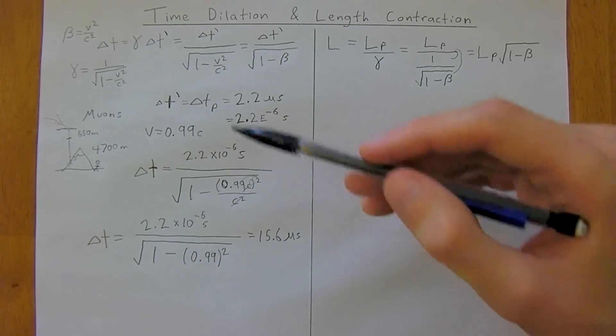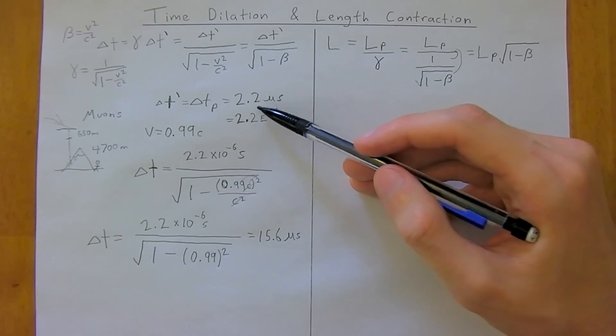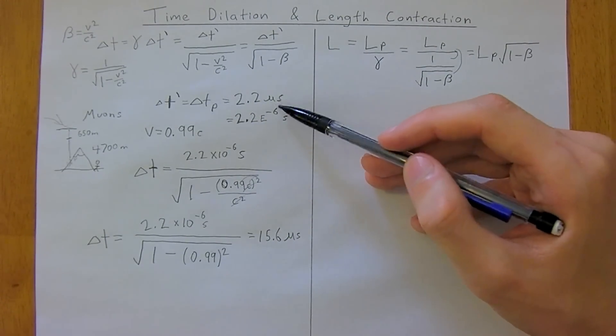But, from the reference frame of the muon itself, it still has a lifetime of only 2.2 microseconds.